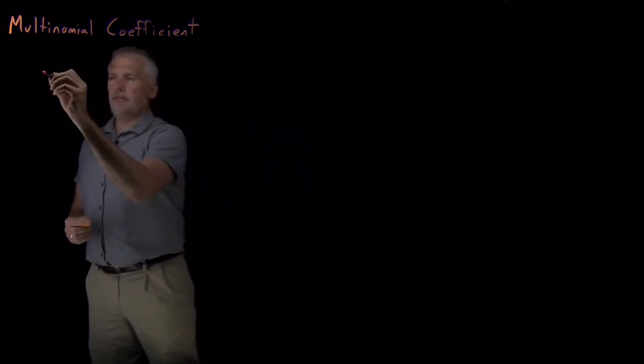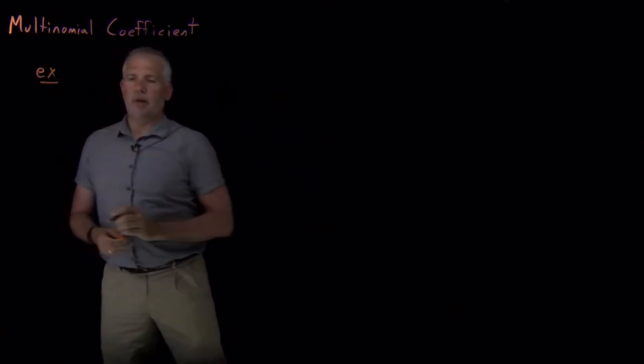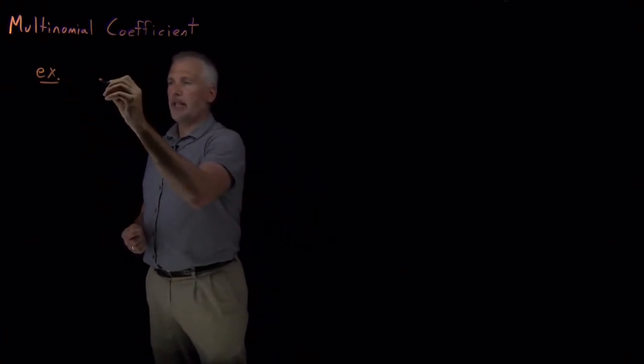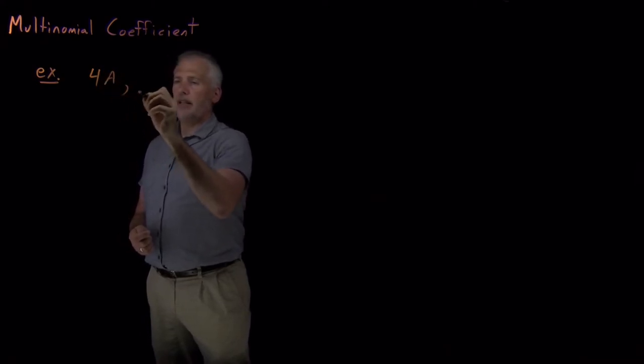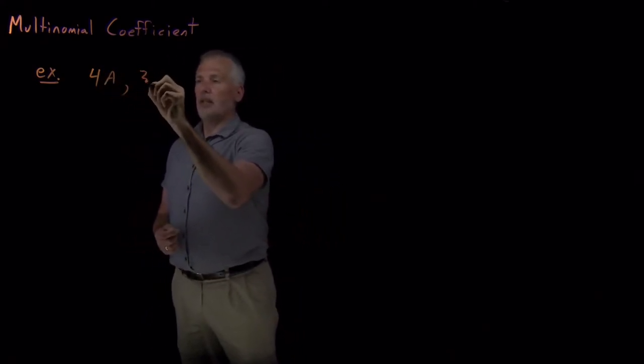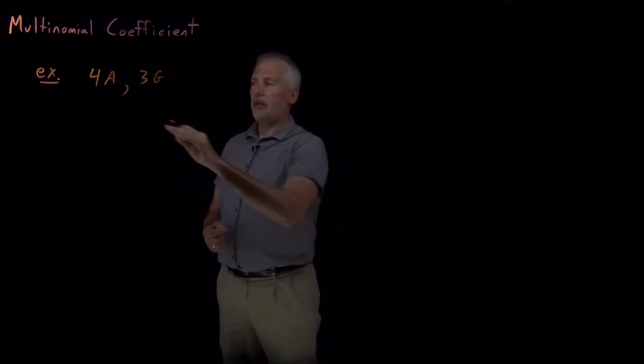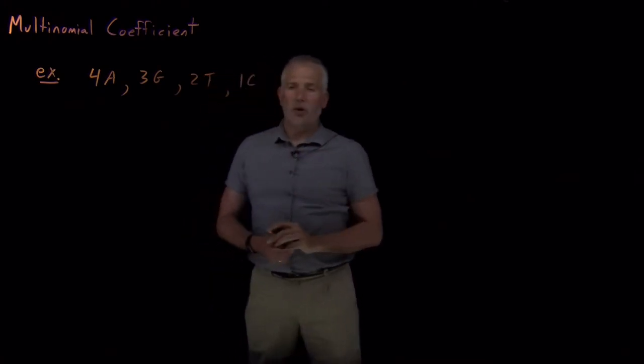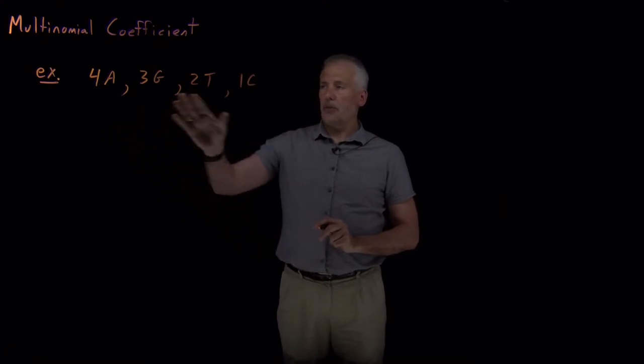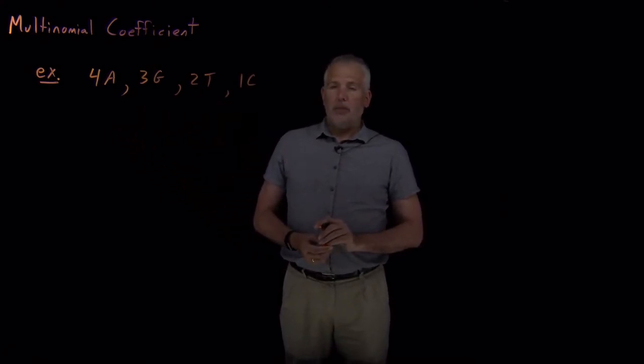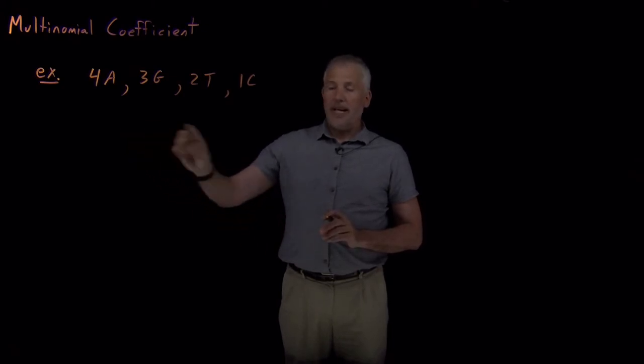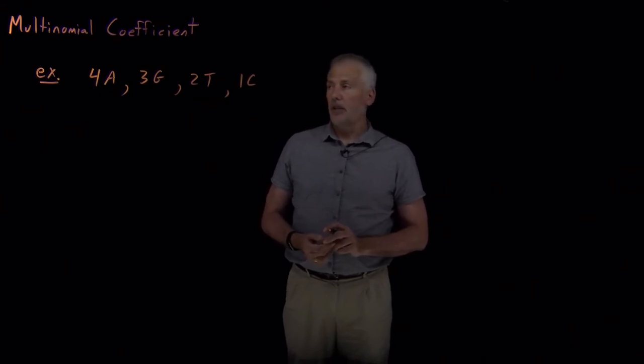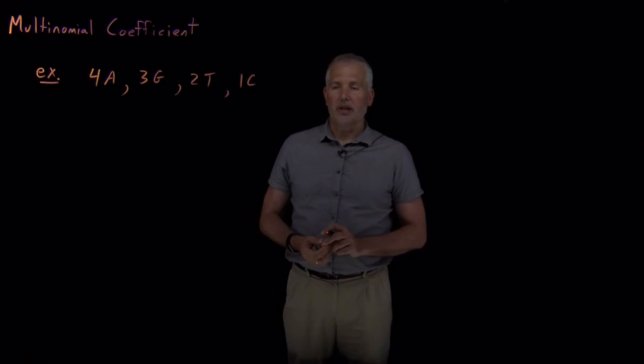To give you an idea of a problem where that might be relevant, let's do a DNA example. Let's say we have 10 different bases: four adenines, three guanines, two thymines, and one cytosine. So the total of 10 different bases, 4 plus 3 plus 2 plus 1 is 10. And I want to know how many different 10-mers of DNA can I assemble out of these 10 individual monomers. I could put them together in this order or some other order, how many different combinations are there.